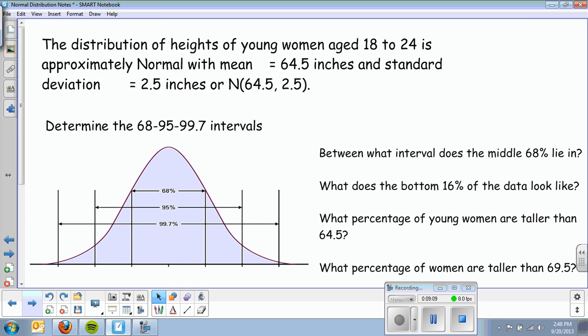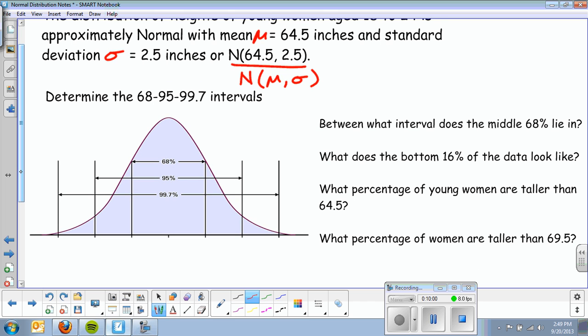First example: the distribution of heights of young women aged 18 to 24 is approximately normal with the mean μ = 64.5 inches and standard deviation σ = 2.5 inches. Sometimes you'll see it abbreviated as N(64.5, 2.5), and they're always in the order of the mean first and then the standard deviation. What that's basically saying is the average girl aged 18 to 24 is 64.5 inches tall, about 5 foot 4 and a half, and on average the numbers are 2.5 from the mean.